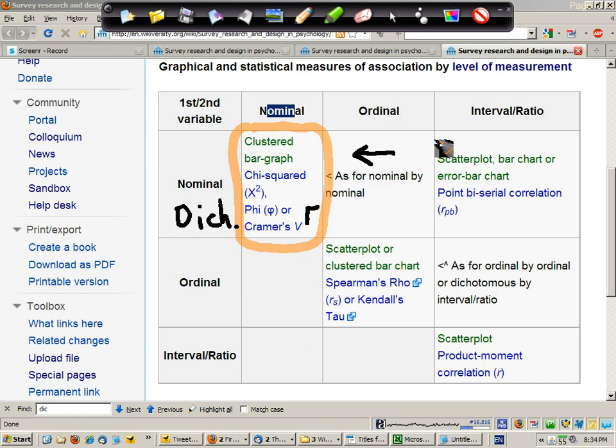In the next scenario, we have ordinal-by-ordinal data. In that case, a scatterplot or a clustered bar chart could be appropriate, and we can use Spearman's rho, which is the normal Pearson product moment correlation, hence the r or the subscript s, or Kendall's tau as the equivalent of Pearson's product moment correlation.